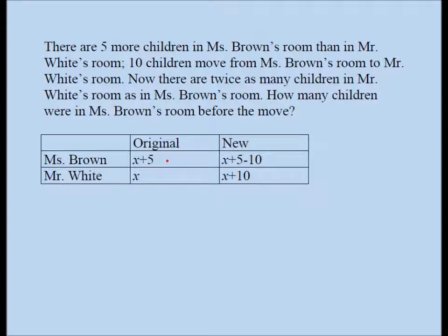Because ten children move from Ms. Brown's room to Mr. White's room, to get the new scenario, I subtracted ten from X plus five and I got this, and then I added ten to X and I got this. I just did my math here. I had five minus ten, and five minus ten is minus five. So now I have the original scenario in both classes and the new scenario in both classes.